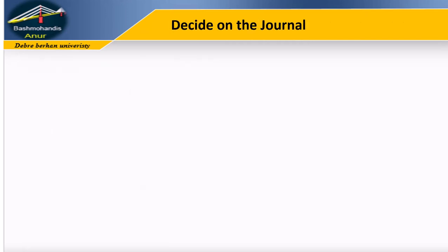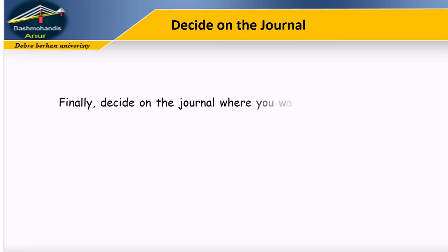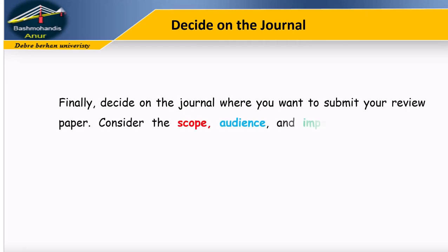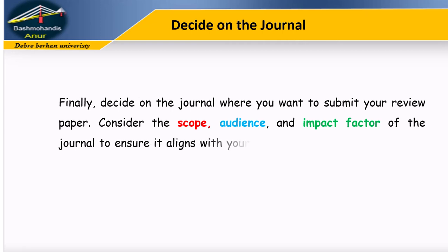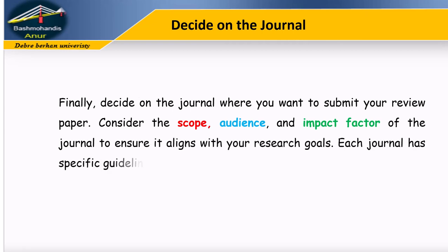Step 6: Decide on the journal. Finally, decide on the journal where you want to submit your review paper. Consider the scope, audience, and impact factor of the journal to ensure it aligns with your research goals. Each journal has specific guidelines, so tailor your paper accordingly.